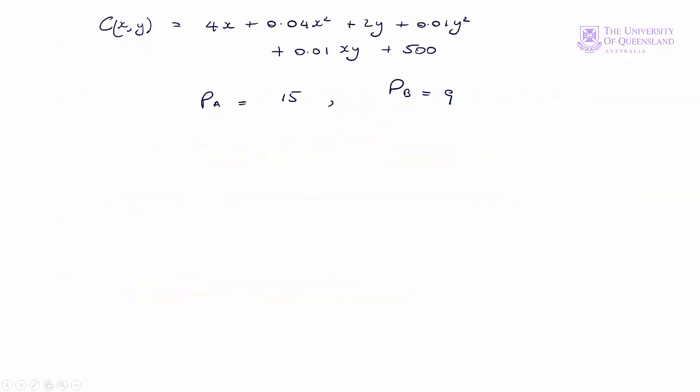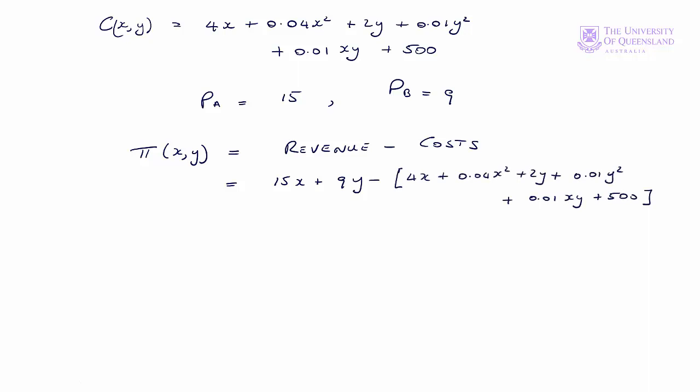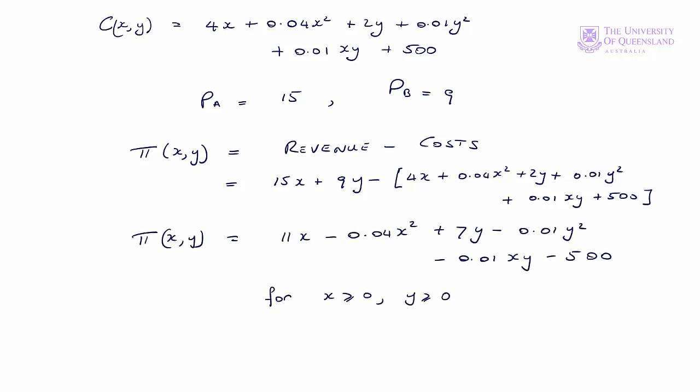We have our cost function. The prices of goods a and b are 15 and 9 respectively. Profit is simply revenue minus costs. Revenue is 15 times the quantity of a produced plus 9 times the quantity of b produced, and we subtract our cost function. Always be careful with the signs when you're subtracting. We can simplify that to get the profit function. Our next step is to find the stationary points.